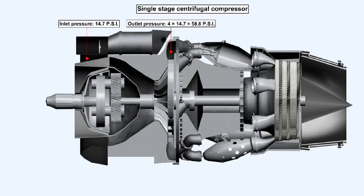The compression ratio of a very efficient single-stage centrifugal compressor would be in the region of 4 to 1. This means that the outlet pressure of the compressor would be four times greater than its inlet pressure.